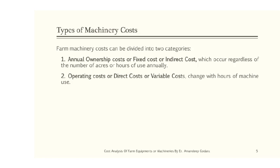Types of machinery cost: costs can be divided into two categories. First is fixed cost, also called indirect cost or ownership cost, which occurs regardless of the number of acres or hours of use annually, whether the machine is in use or kept idle — it does not depend upon the amount of use or quantity of work done. The second is operating cost, also called direct cost or variable cost, which changes with hours of machine use and depends upon the volume of machine output.